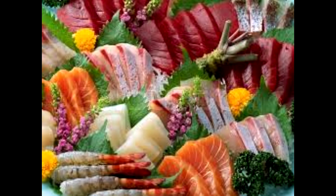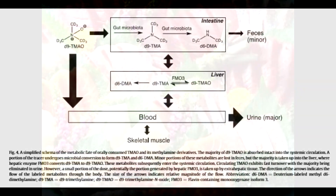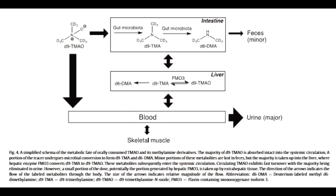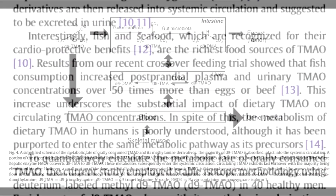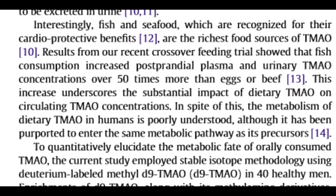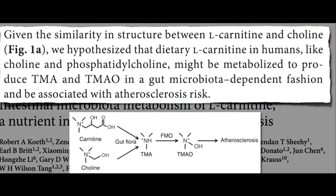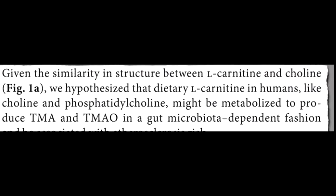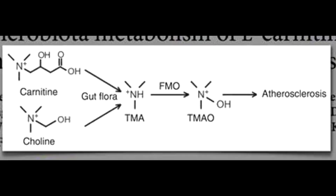So basically every meal is a decision — choose your foods wisely. Even though fish and seafood is touted for cardioprotective benefits, fish is one of the richest sources of TMAO. Blood and urine levels of TMAO can be up to 50 times higher with fish compared to eggs or beef, increasing atherosclerosis risk.